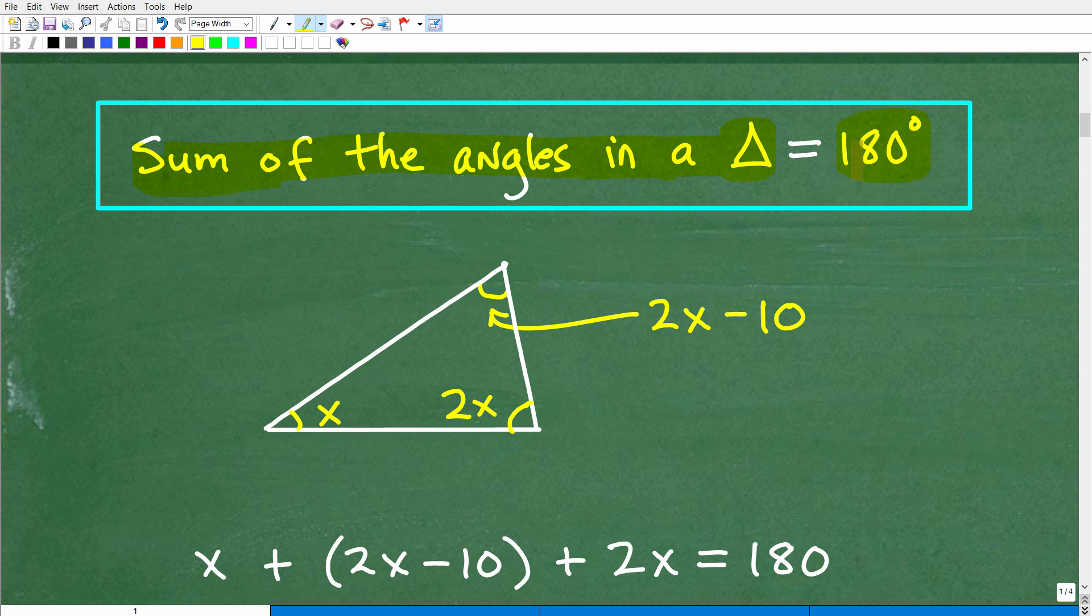Every single triangle out there, if you add up the angles in that triangle, you'll always get 180 degrees. So this particular triangle, if I take this angle and I add it to this angle and then I add it to this angle, okay, it doesn't make a difference what triangle I'm dealing with, but this angle plus this angle plus this angle, all the angles, when you add them all up, you get 180 degrees.